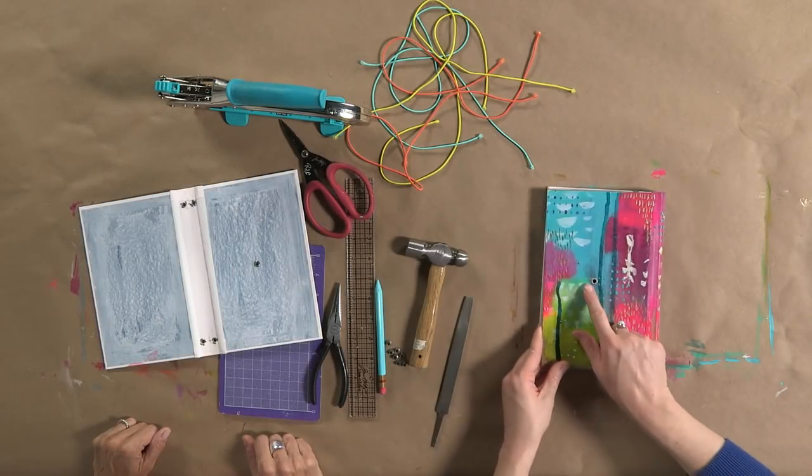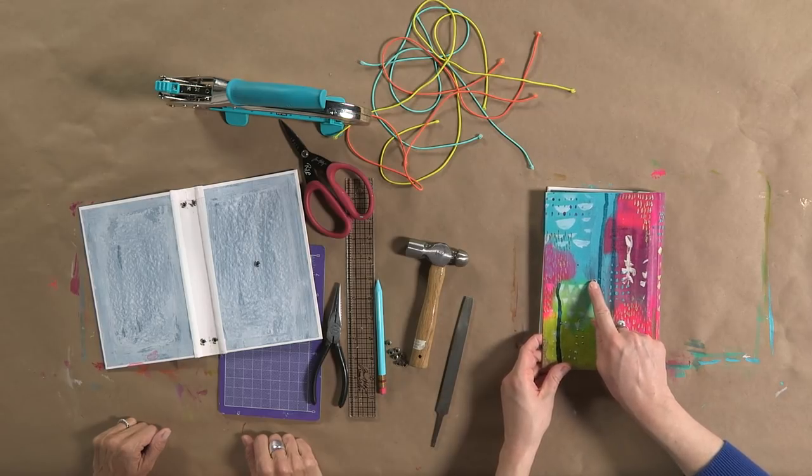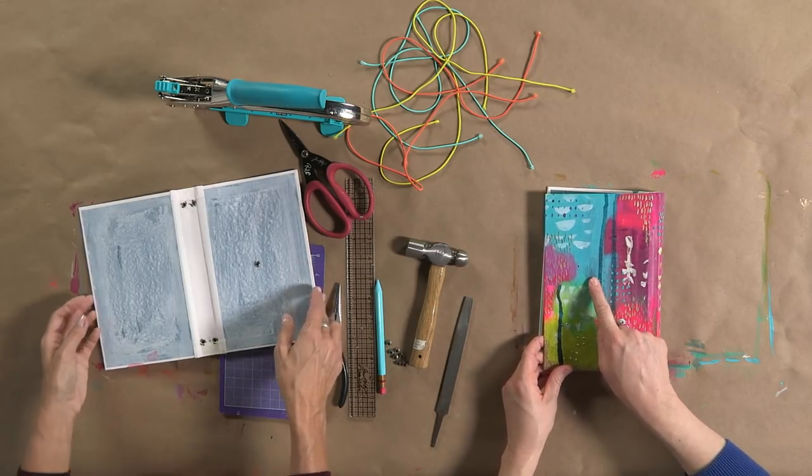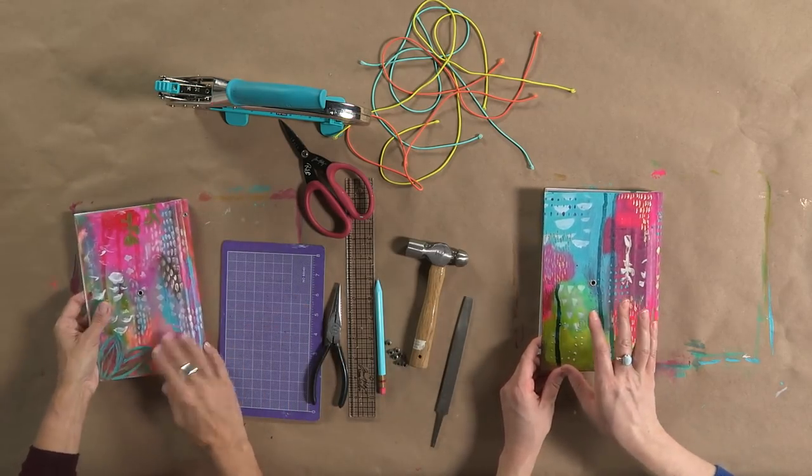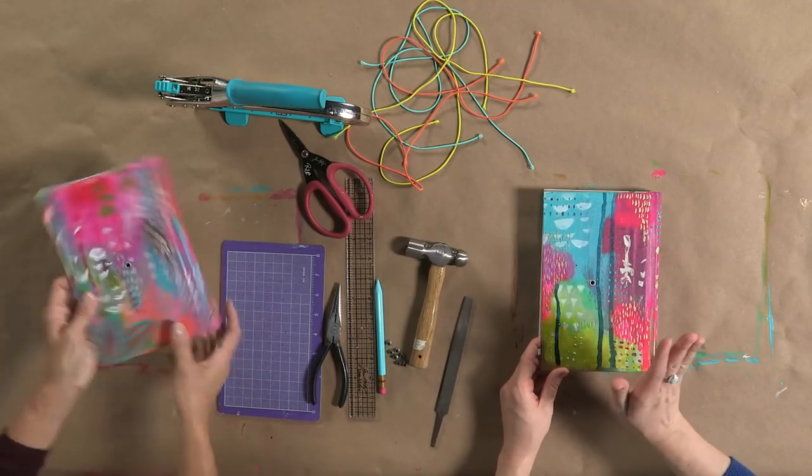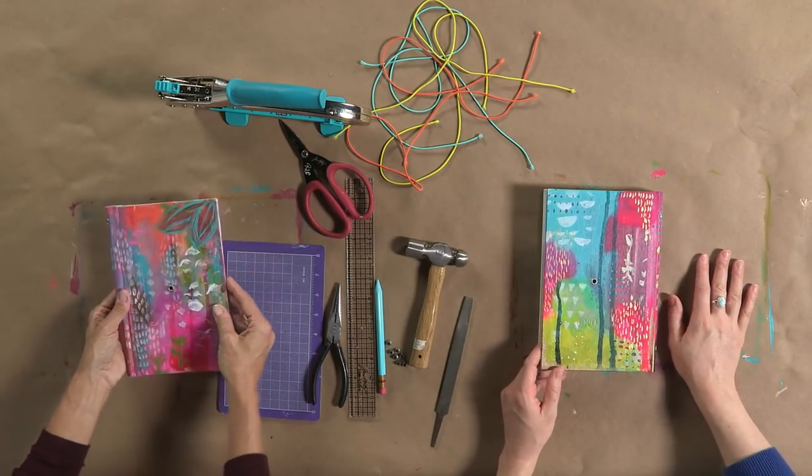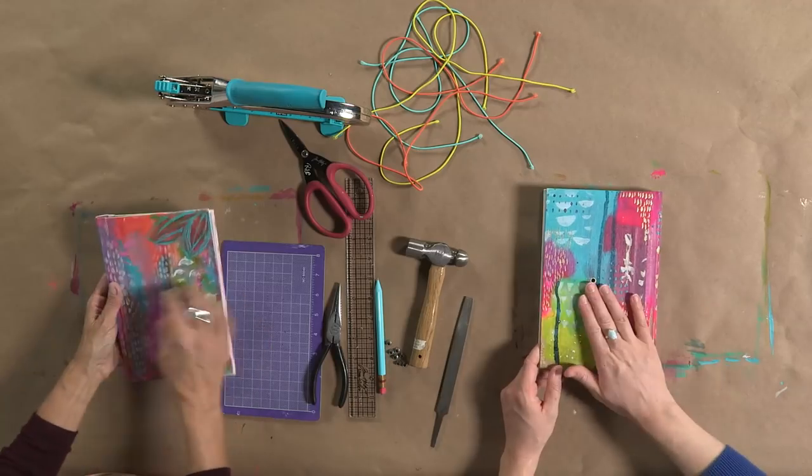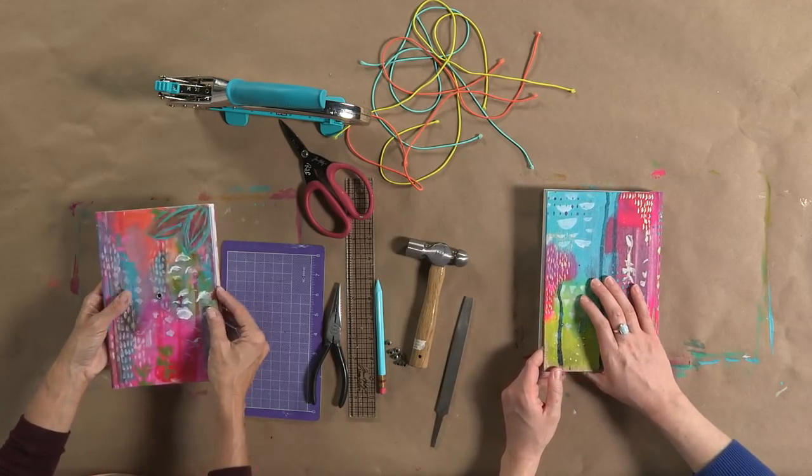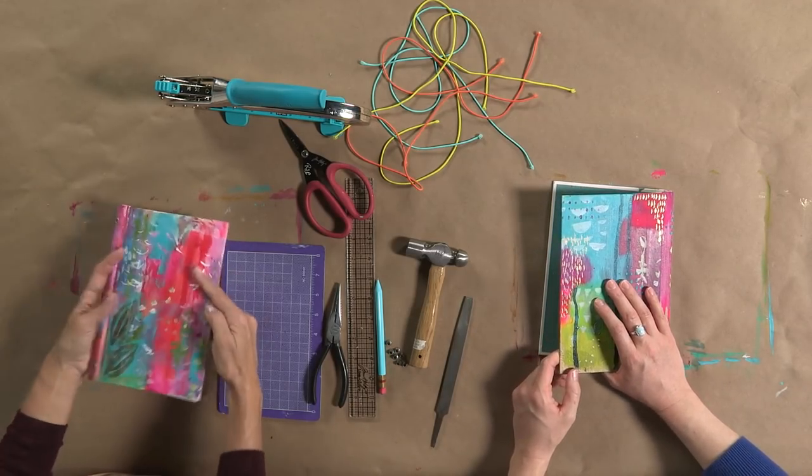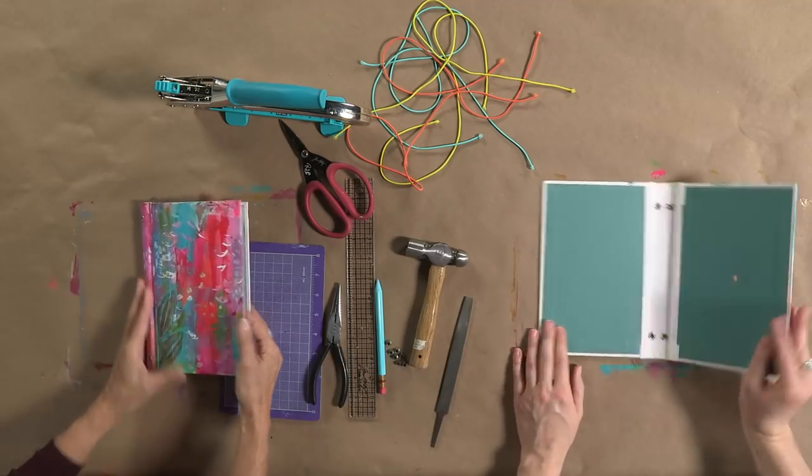Just because we set this on what we consider now to be our front cover, we can totally decide it's a back cover later. All this is doing is later we're going to come back in and add something here for a closure to help hold our book closed, and it looks equally pretty on the front as it does on the back, so we have options.